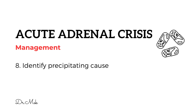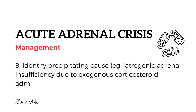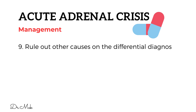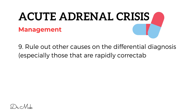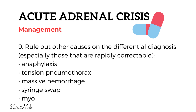Identify the precipitating cause — for example, iatrogenic adrenal insufficiency due to exogenous corticosteroid administration. Rule out other causes on the differential diagnosis, especially those that are rapidly correctable, such as anaphylaxis, tension pneumothorax, massive hemorrhage, syringe swap, and myocardial ischemia/infarction.